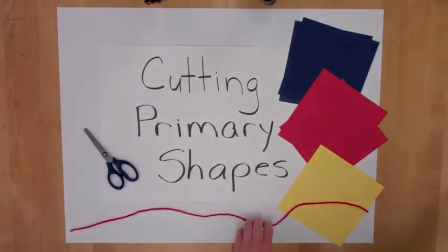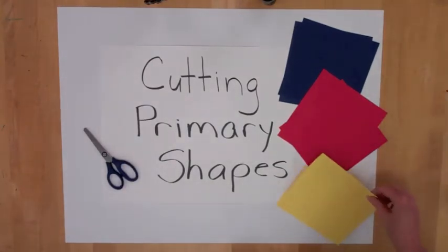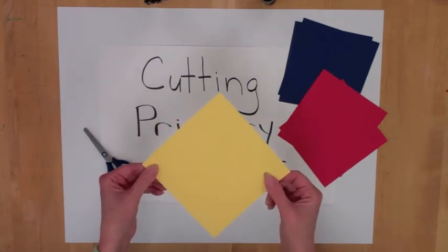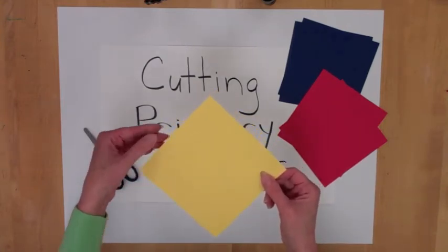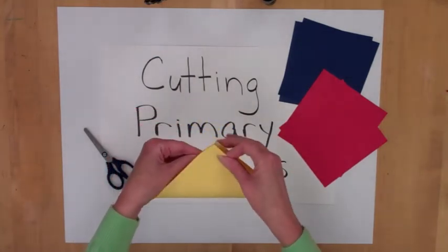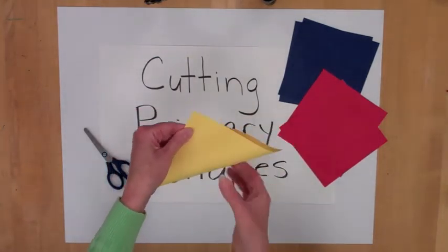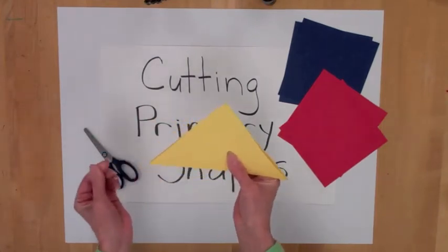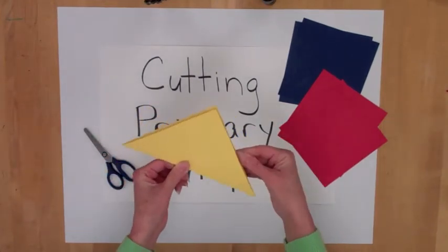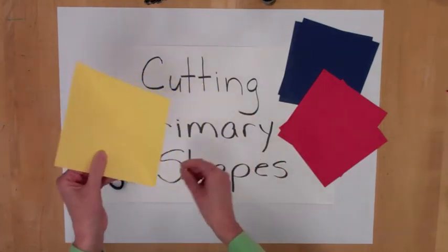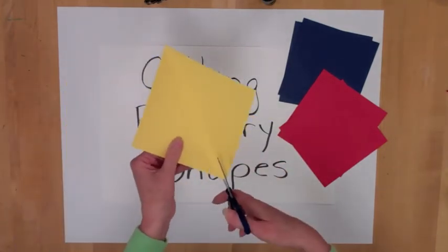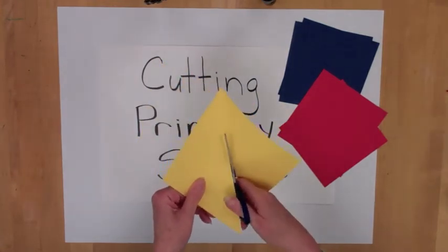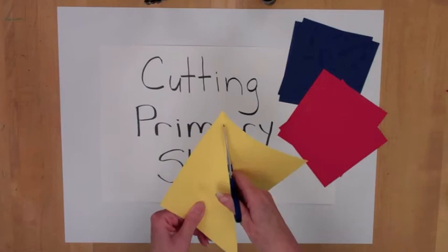We start by folding the yellow square and what I have them do is turn it so that it is now a diamond. You fold the diamond point to point to turn it into a triangle. Push down on the fold. Then you open it up and you cut on the fold, opening your scissors wide so that the alligator chomps down.